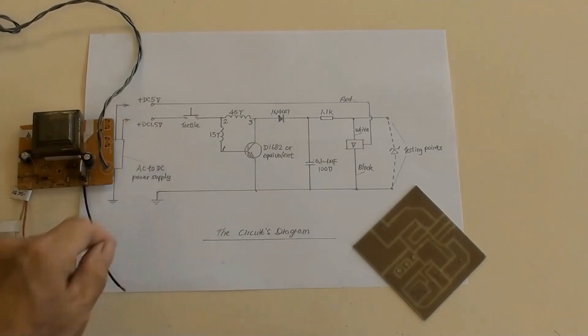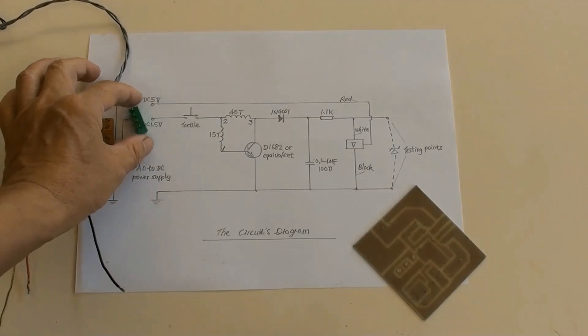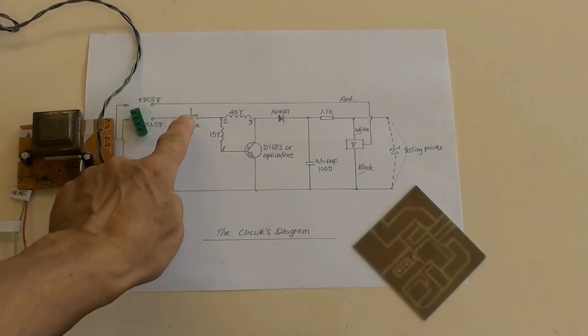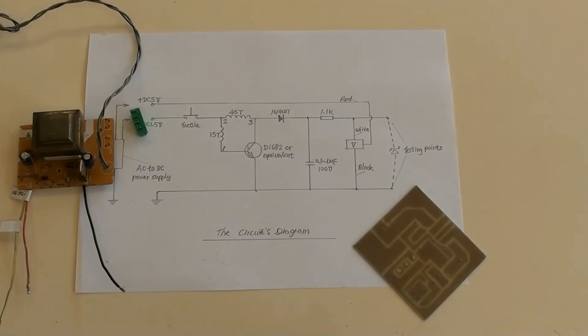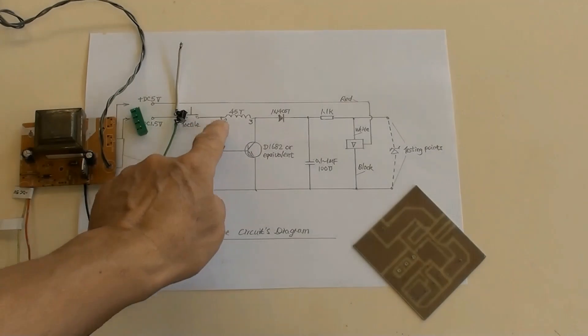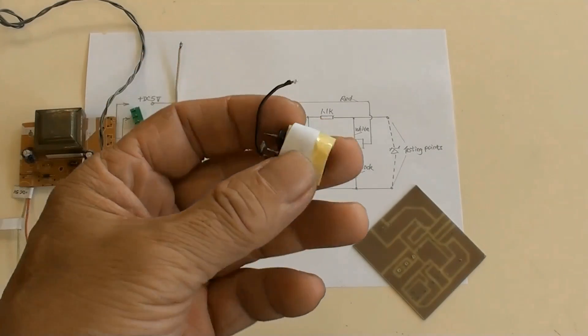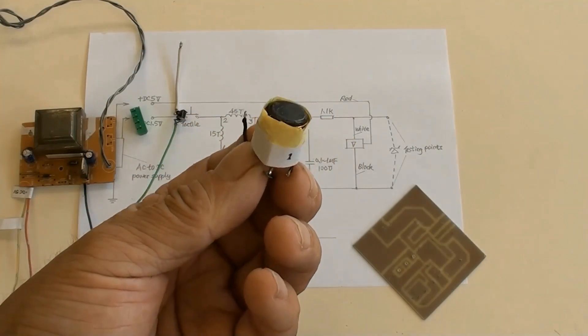Those are the pins connectors for the DC power supply. And it is here. That is the tactile switch. And it is here. This is the mini transformer, and right here, which it has 15 turns between terminals 1 and 2, 45 turns between terminals 2 and 3.